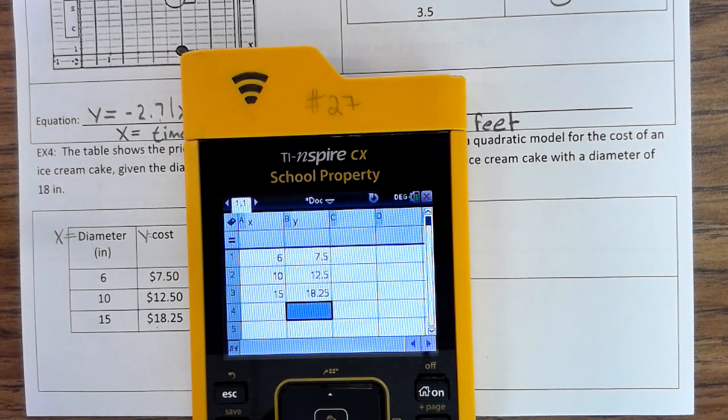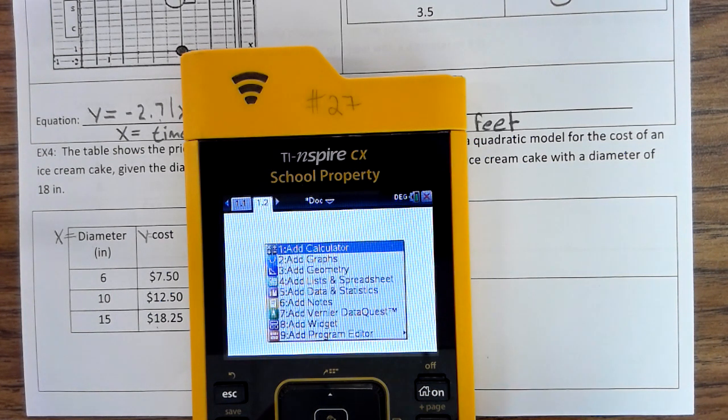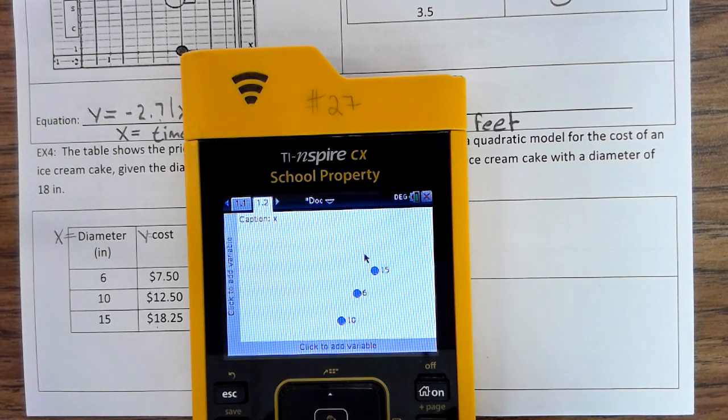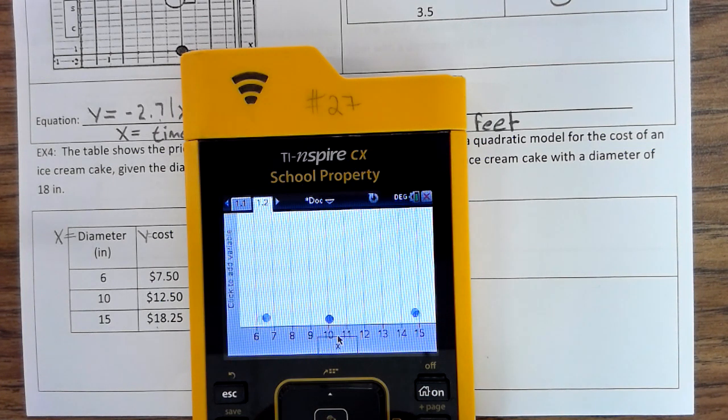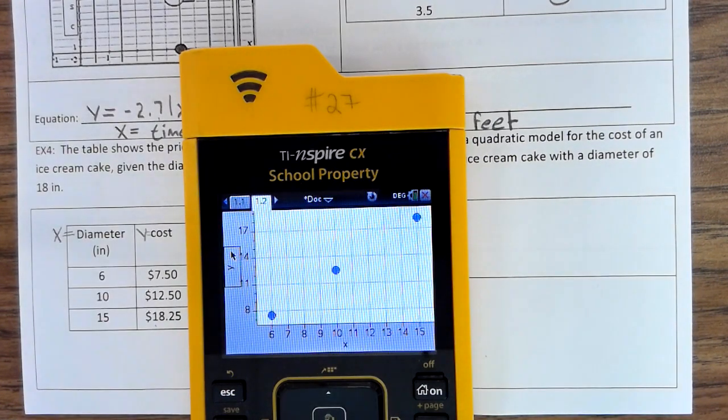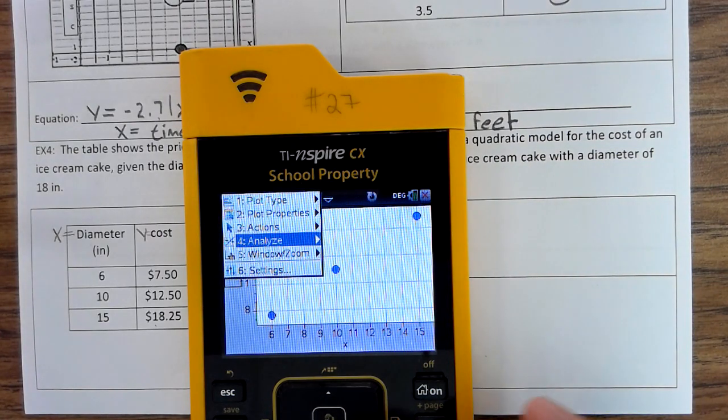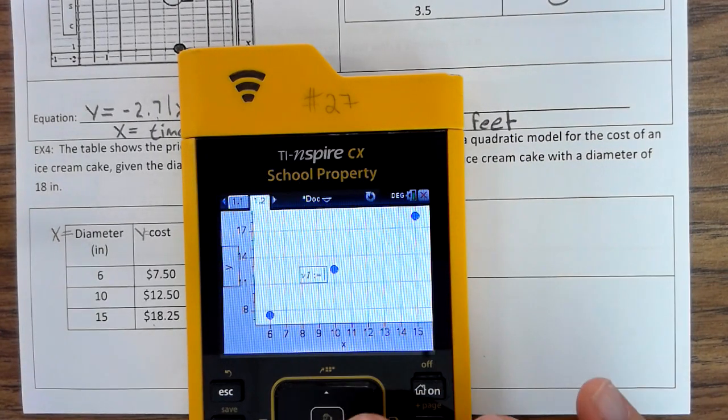Okay, so now we're going to do control, doc, add data statistics, tab X, tab Y, menu, analyze, regret.